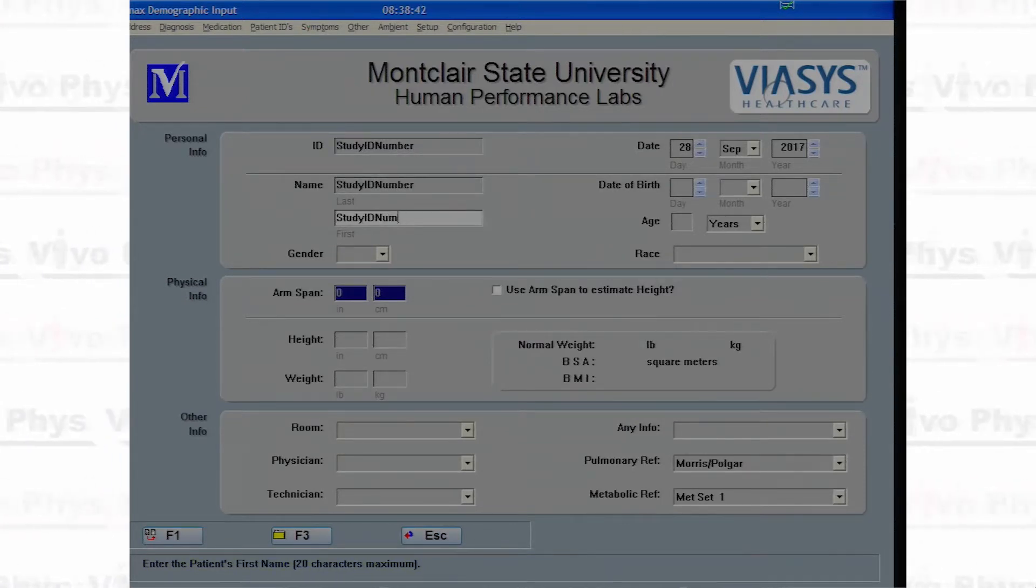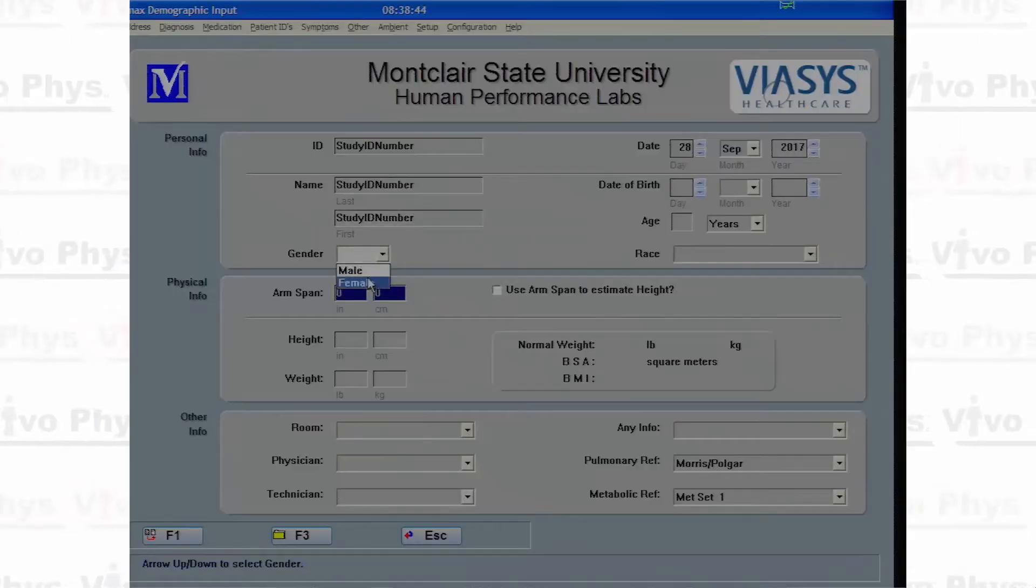If this is for a research study, you're not going to put a first and last name—just their research ID for all three fields. You're also going to want to put in their date of birth, gender, race, how tall they are, and how much they weigh.